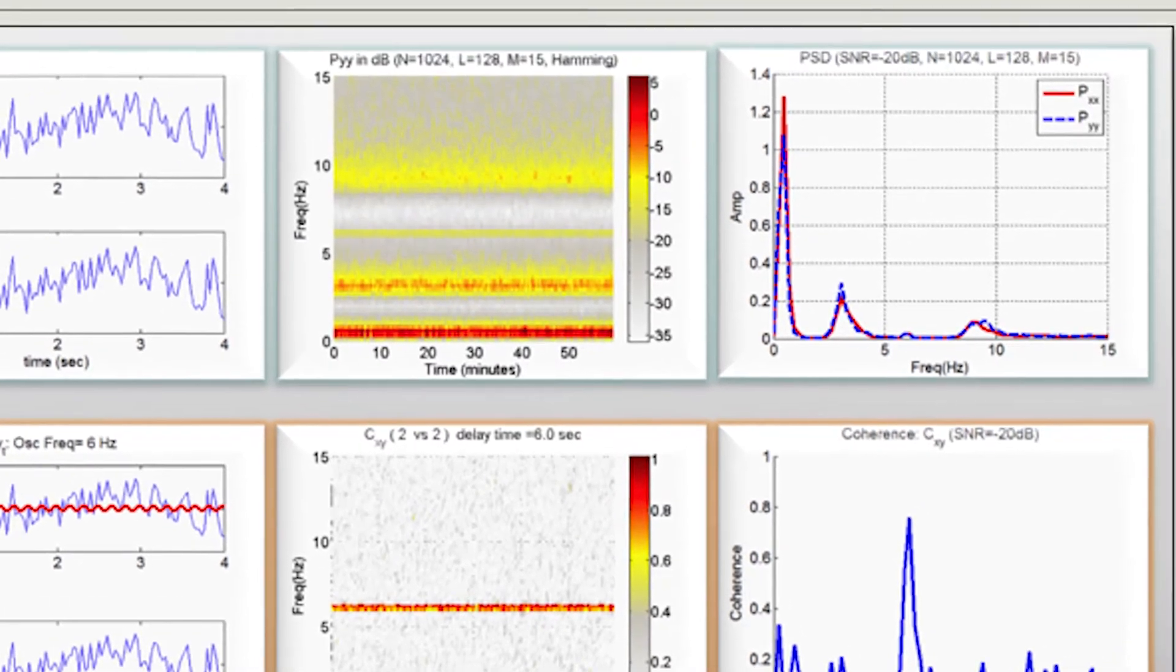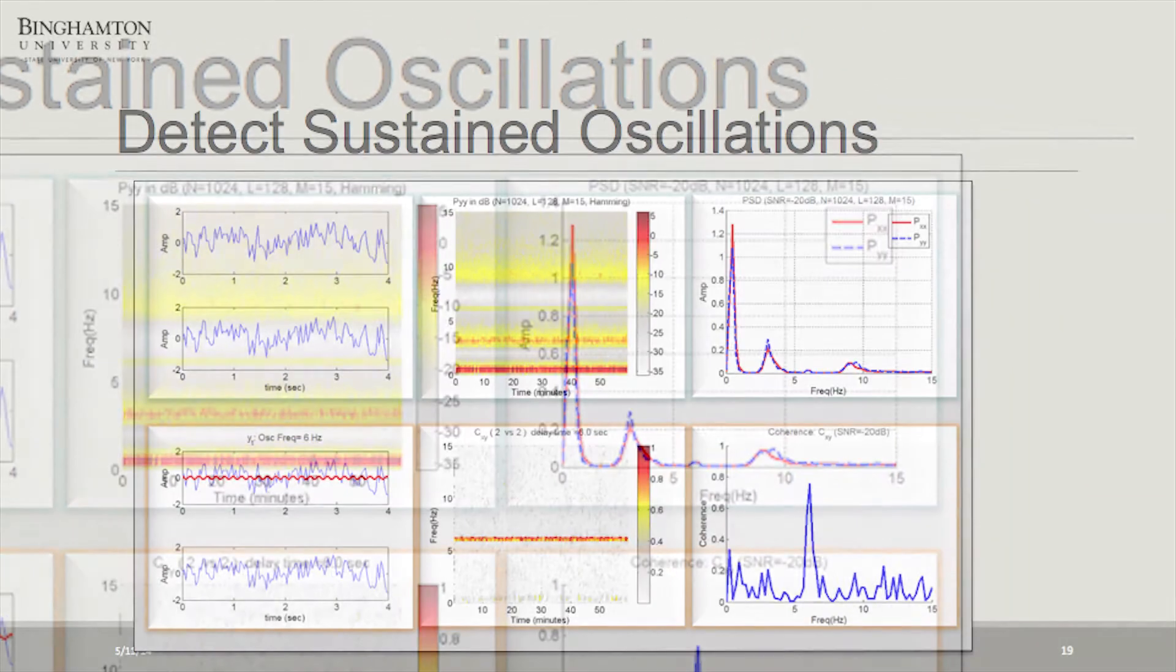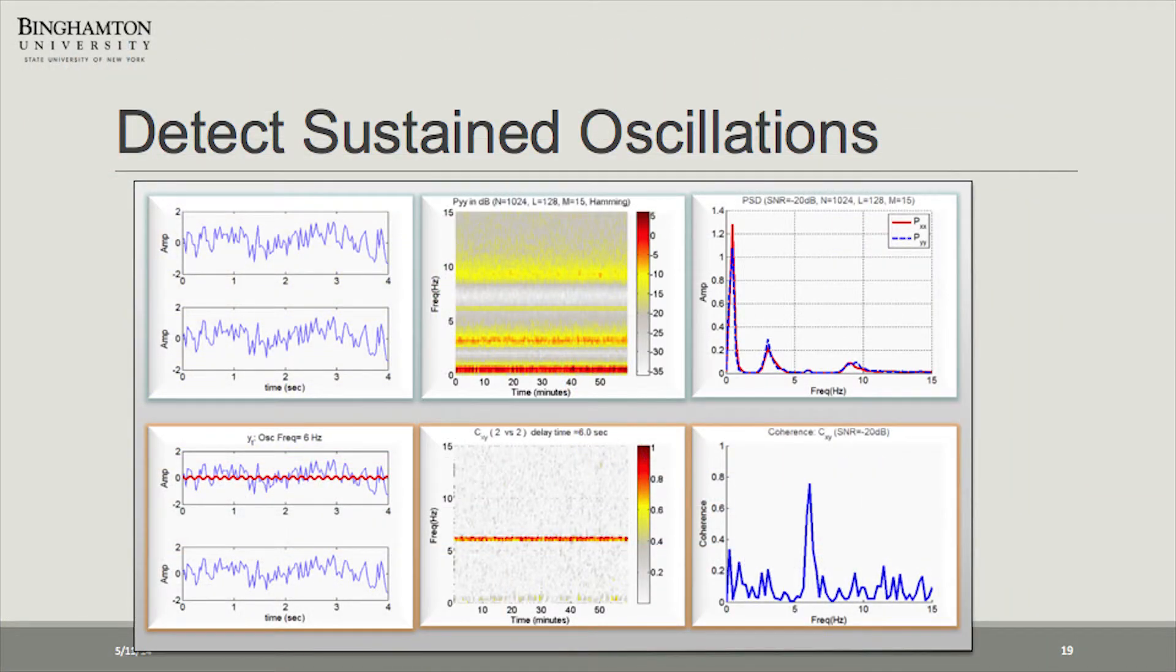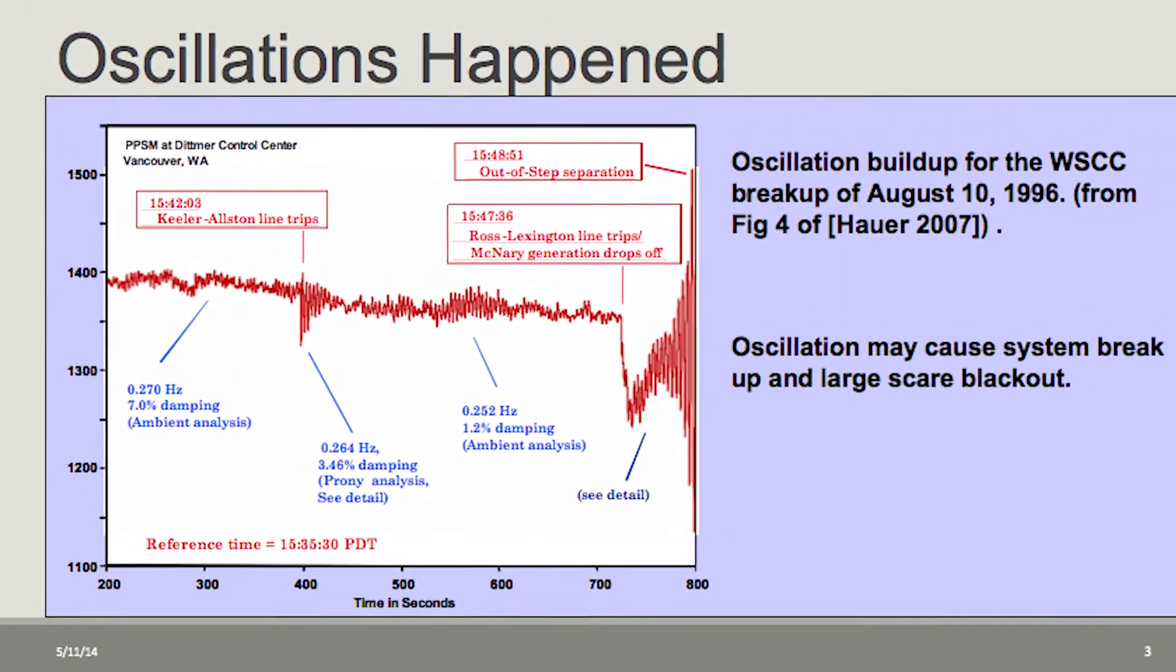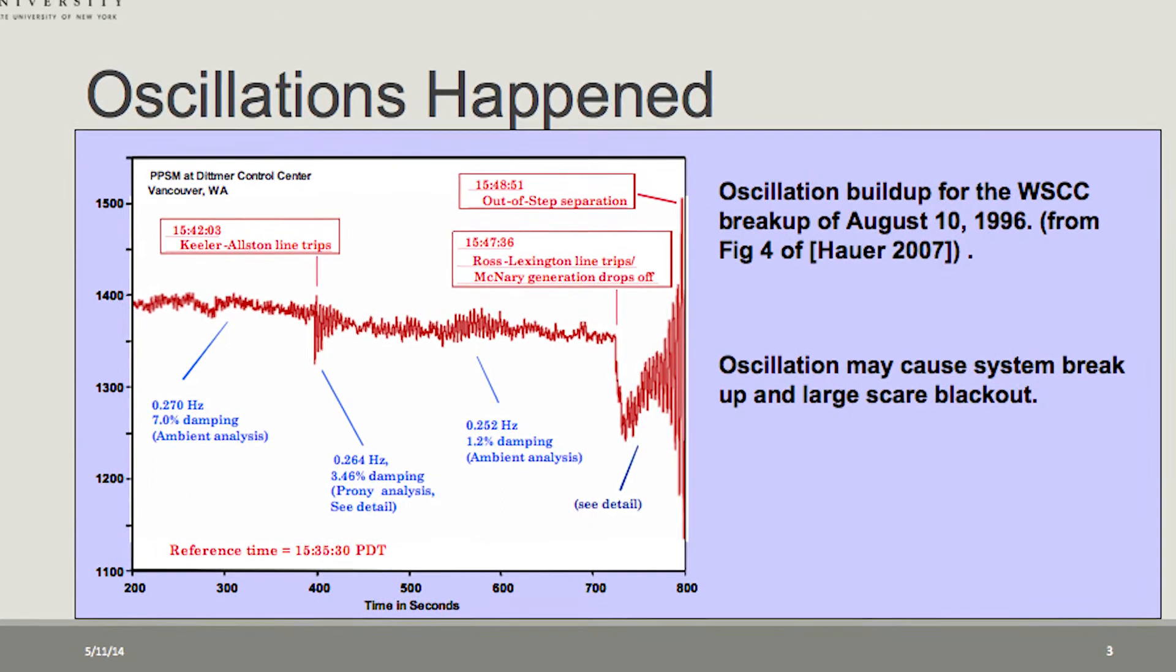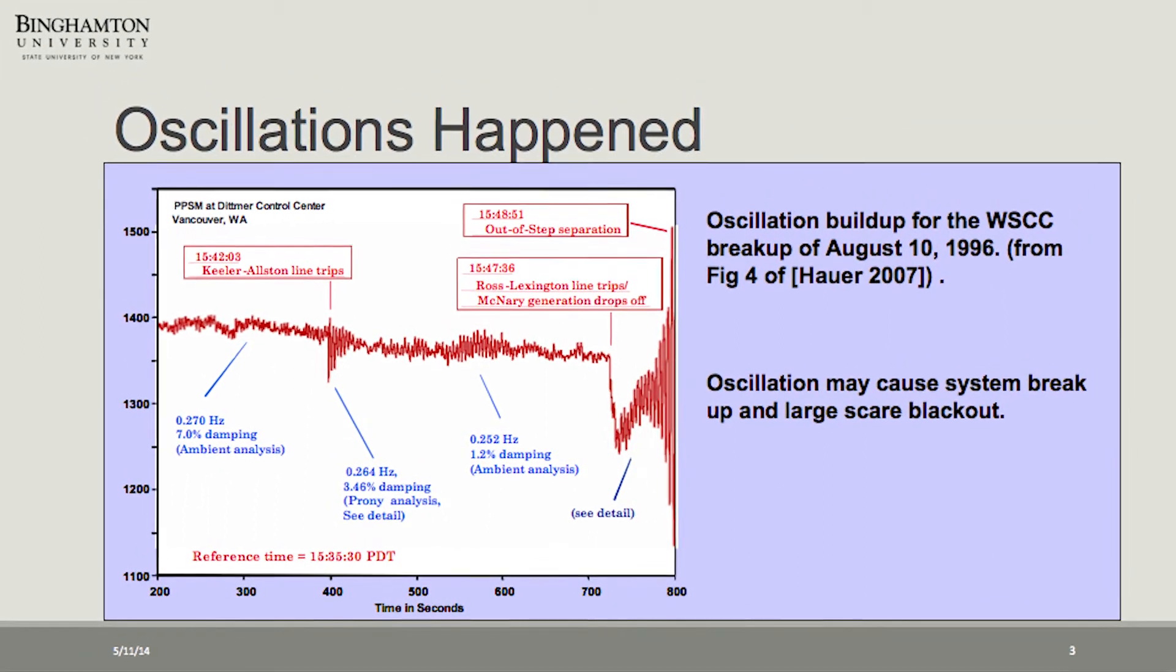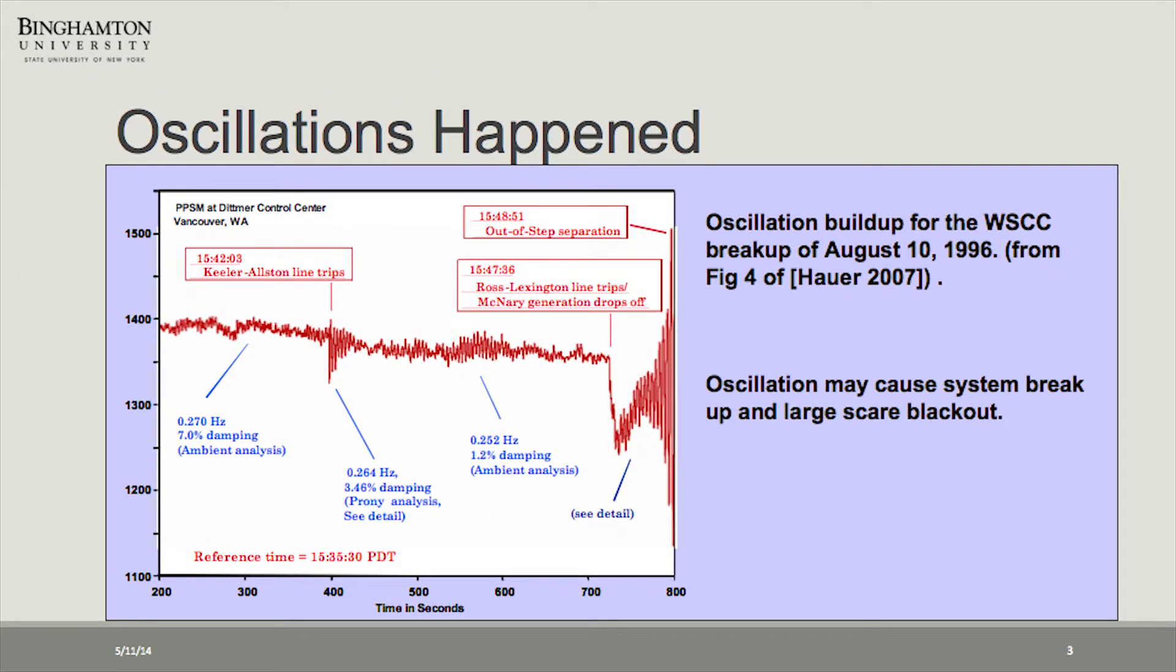Oscillations occur in the power grid frequently and are the result of different devices on the system interacting with each other. While oscillations can begin as minor disturbances, they can quickly escalate into large-scale grid events like the major blackout on the west coast that happened in 1996.